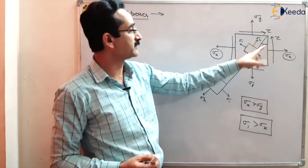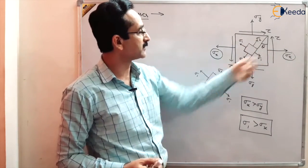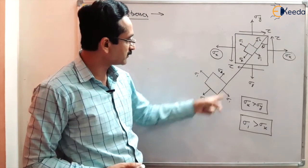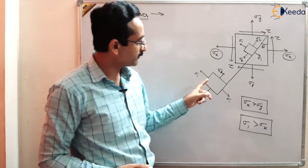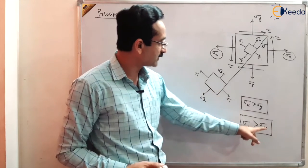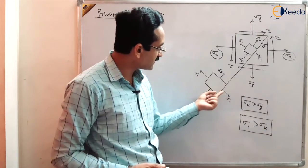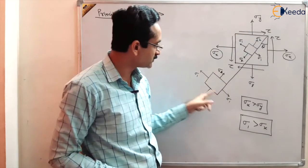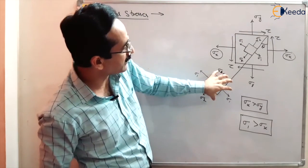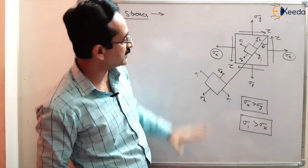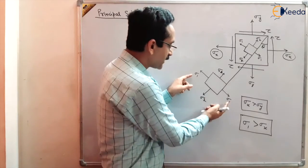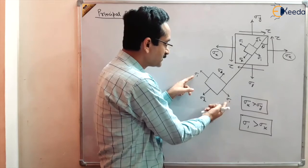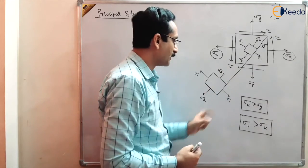And the chances of failure are at these stresses, Sigma 1 and Sigma 2. These stresses Sigma 1 and Sigma 2 are higher than Sigma X, and there is no shear stress at this element. We have applied shear stresses, but on this principal element there is no shear stress. So these stresses are called principal stresses. One of the stresses is maximum and another will be minimum — if Sigma 1 is maximum, Sigma 2 will be minimum.